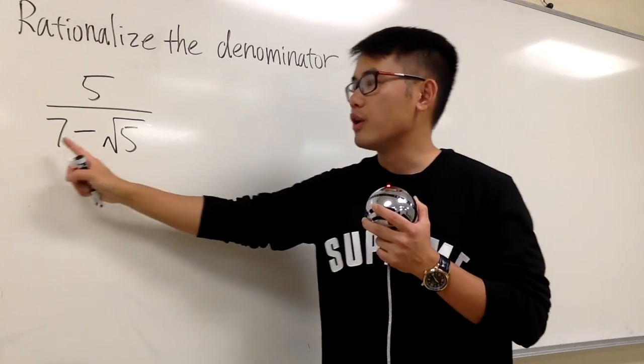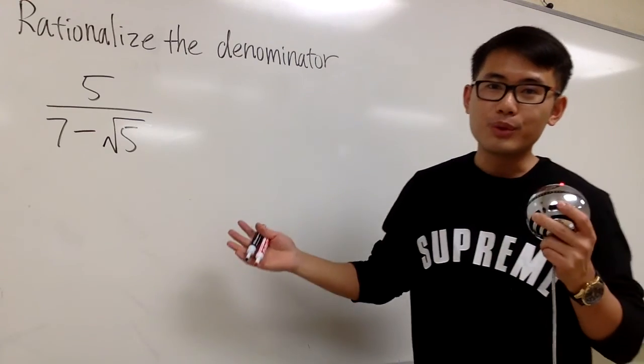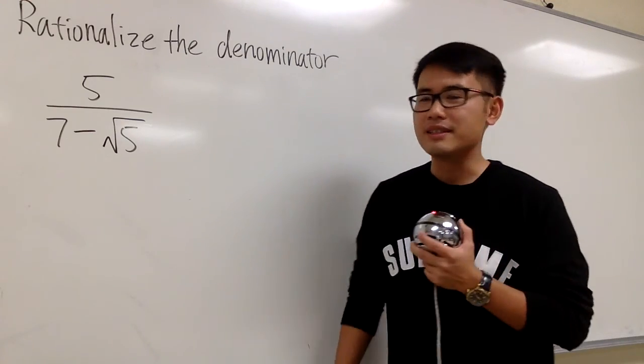In this case, we have two terms, the 7 minus the square root of 5. And this is what we do. We have to use the conjugate in this situation.